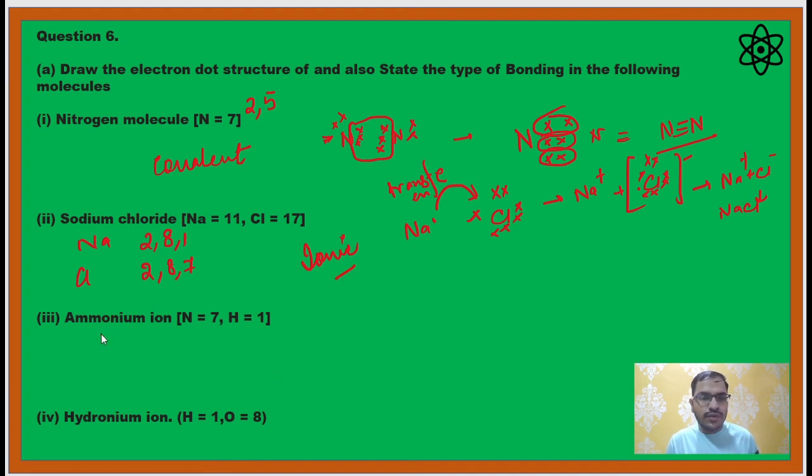Now formation of ammonium ion or hydronium ion, I will discuss both. Ammonia has one lone pair, and hydrogen ion will accept that one lone pair. So nitrogen is donating its complete lone pair to hydrogen to form ammonium plus. The bond which is formed is coordinate bond.